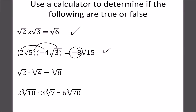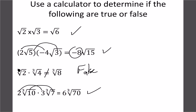This next example: root 2 times cube root 4 equals cube root 8 — that's false. If you try it on a calculator it doesn't work because we have to have the same root index. If it were cube root 2 times cube root 4, that would equal cube root 8. Because one is a square root and the other is a cube root, you can't multiply them — just leave them separate. If both are cube roots, like 2 times 3 is 6 and 10 times 7 is 70, that would be true.